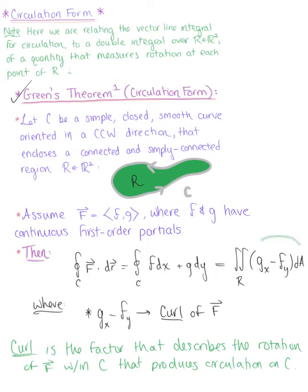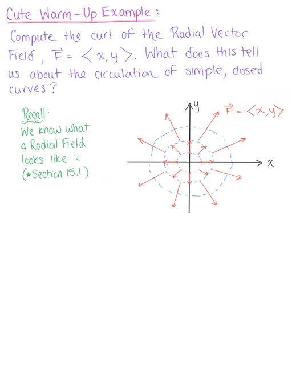This is the circulation form of Green's theorem. To get us warmed up, let's look at a quick example. We are asked to compute the curl of the radial vector field F defined by the components (x, y), and then interpret the results to determine what this tells us about the circulation of a simple closed curve. Recalling what the radial vector field looks like, every vector in this field points outward from the origin, so even before computing the curl, we have a good idea that the circulation here should be zero — there's no rotation.